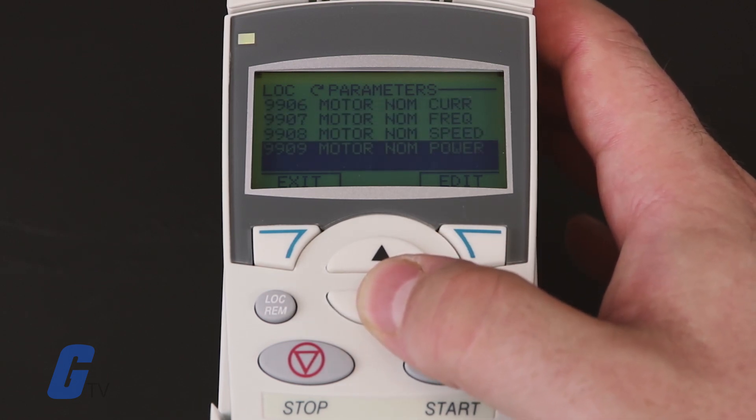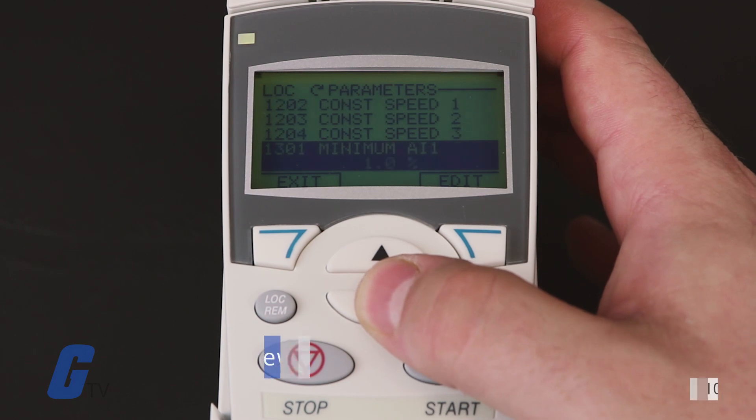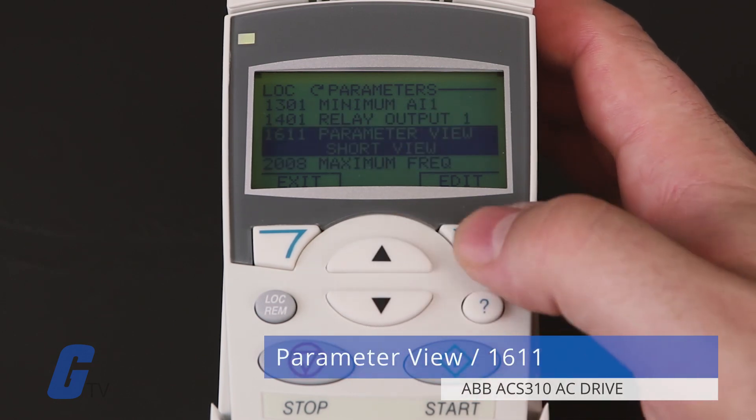If this menu is not visible, you may have to set parameter 1611 to 3 for long view mode.